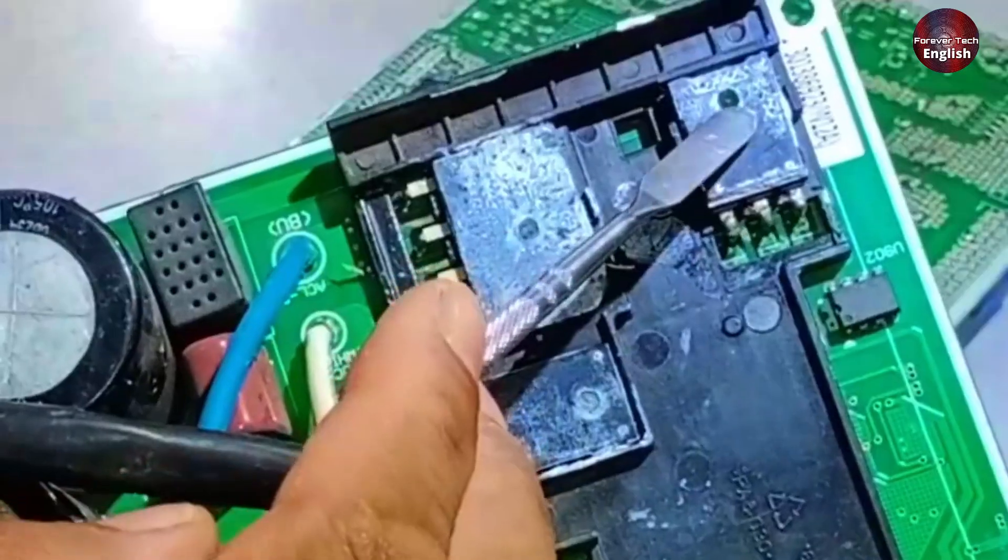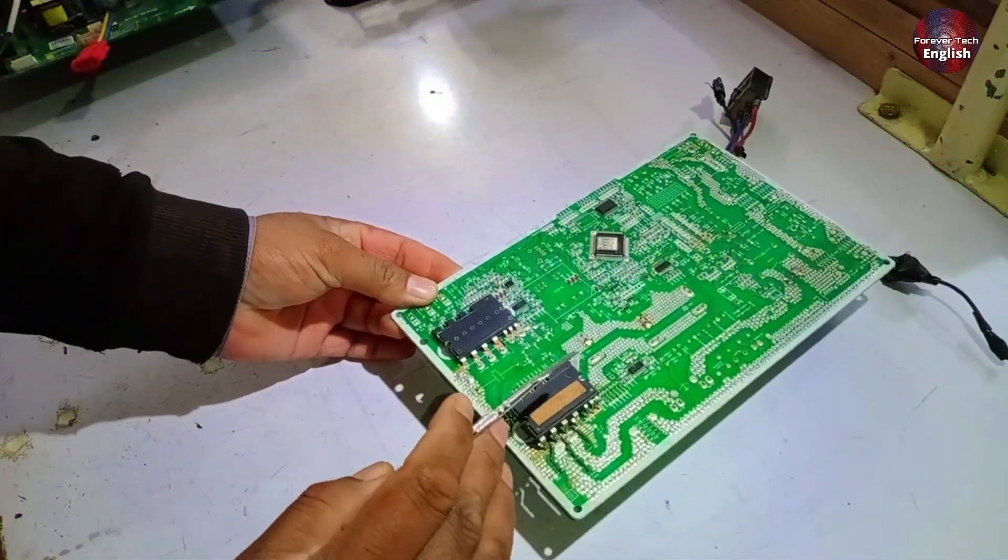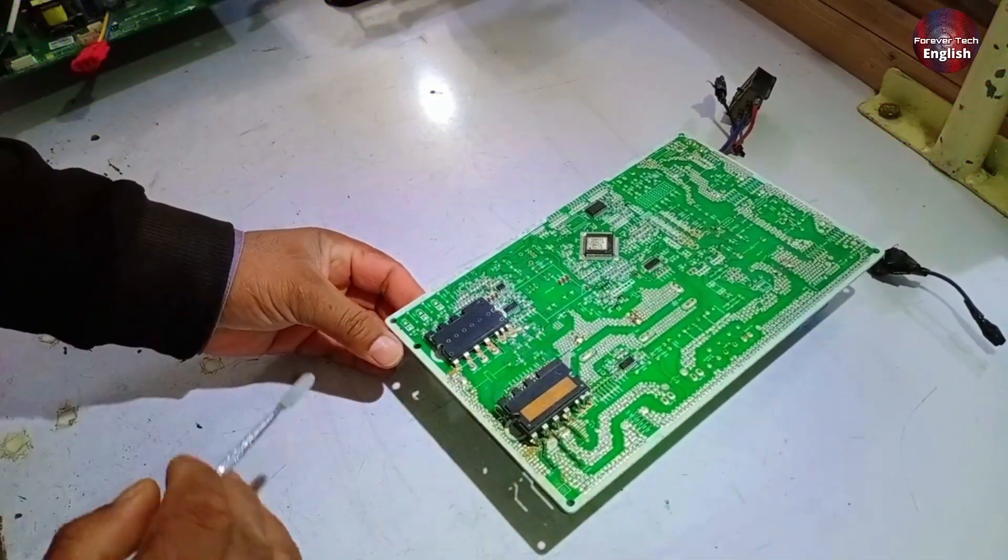Normally, in a typical unit, one IGBT, one diode, and one rectifier are used. Now, what's the advantage here? The use of two IGBTs increases efficiency even further.